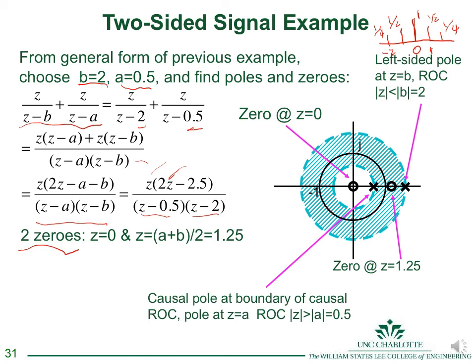The poles and zeros in the z-plane show the inner boundary at |z| = 1/2 and the outer boundary at |z| = 2, with the ring-shaped ROC in between. This is a stable two-sided sequence because the ROC includes the unit circle (radius 1 lies between 1/2 and 2). A system is stable when its ROC includes the unit circle.